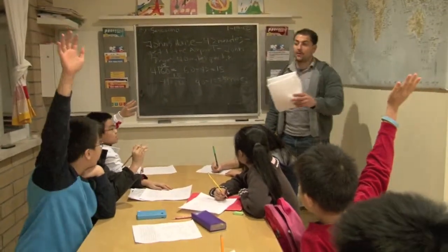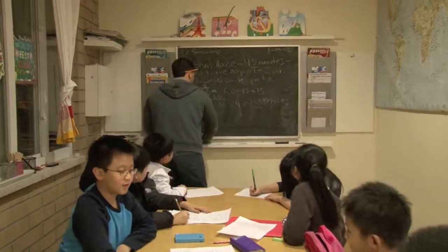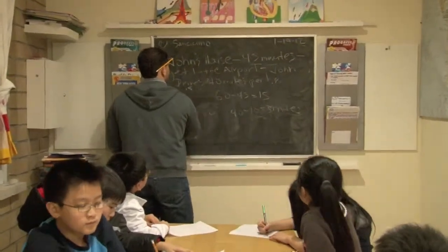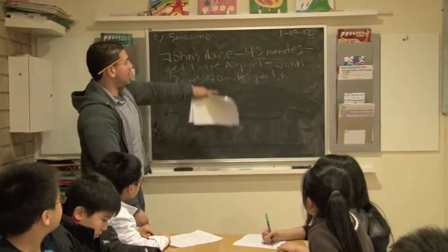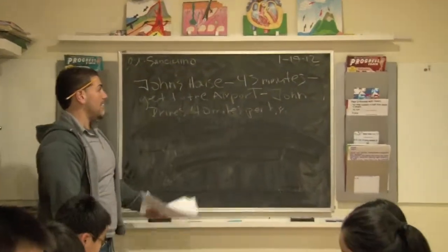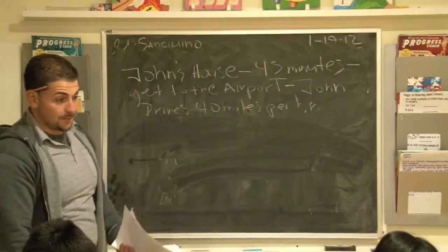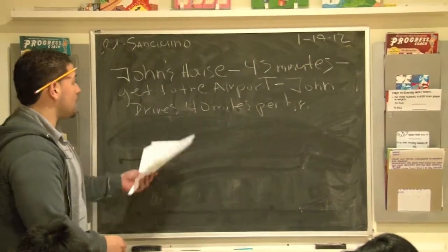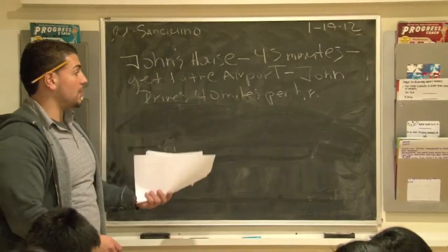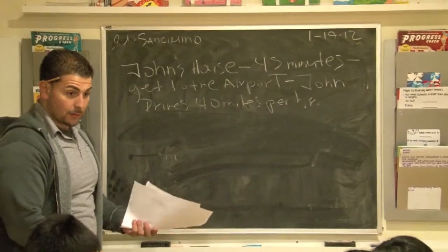Okay, let's break it down one more time. Let's do it really slow and make sure everybody understands. So, it says it takes John 45 minutes to get to the airport, okay? So, how long does it take him? 45 minutes. Now, but John drives his car 40 miles per hour, right? 40 miles per hour.